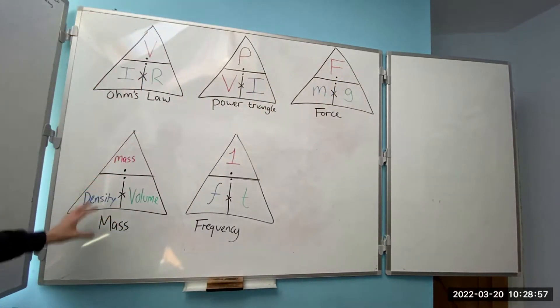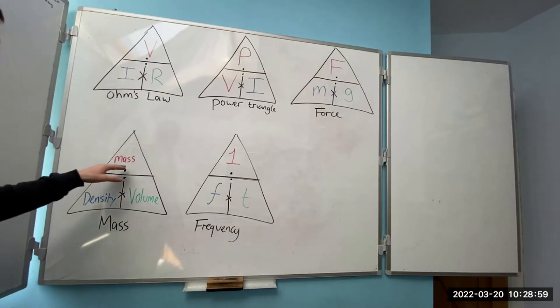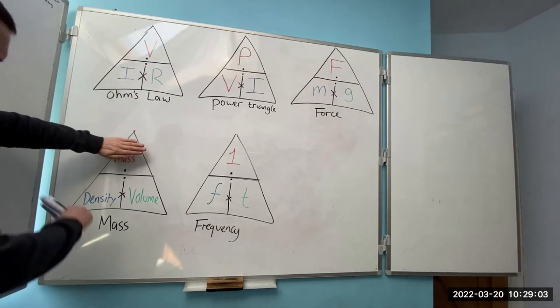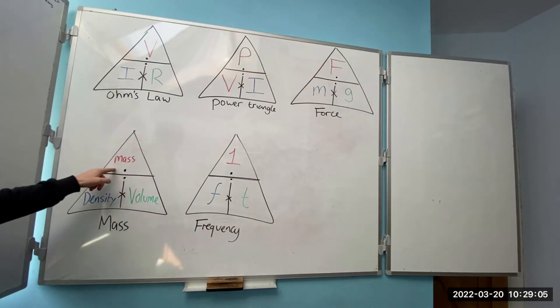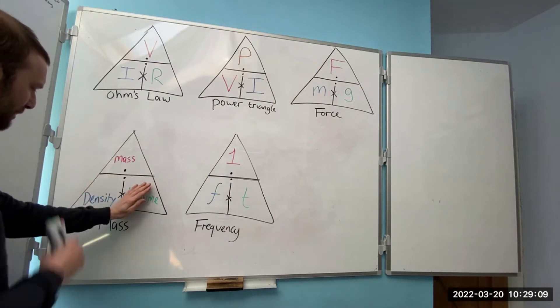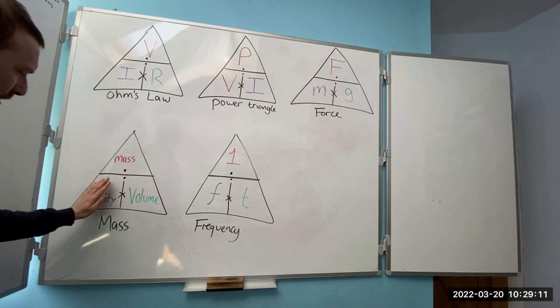Now, on the bottom here, we've got a mass triangle. At the top is mass, density times volume. So if I was looking for mass, density times volume equals mass. If I wanted to find volume, that would be mass divided by density. And if I wanted to find density, it would be mass divided by volume.